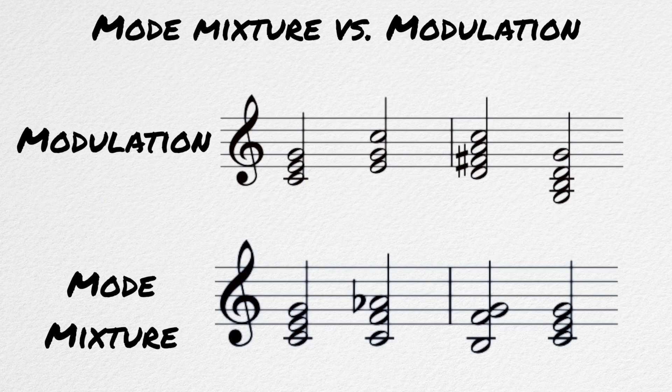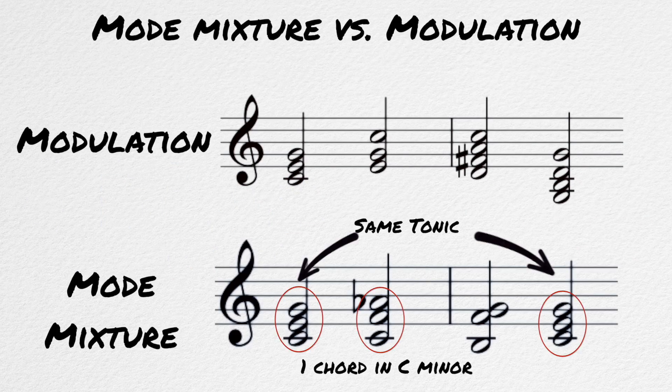But what makes this different than modulation? Mode mixture is usually very brief — just a chord or two — and then the mode switches back. It is done to create a new color and not a new tonality, usually. There are some exceptions to this, which we will cover later.